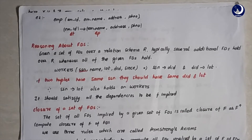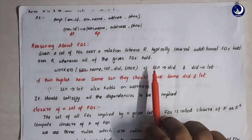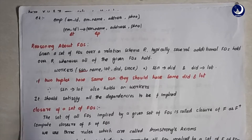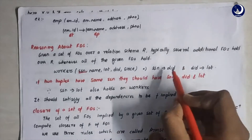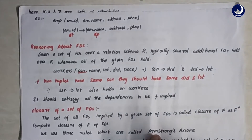Consider a workers table with five columns: SSN, name, lot, DID, and since. Here SSN is the primary key. The functional dependency is SSN defines DID — with SSN you can identify which department an employee works in. But there's an underlying functional dependency: DID defines lot, because the lot size of a department depends only on the department ID. So if two tuples have the same SSN, they should also have the same DID and lot.